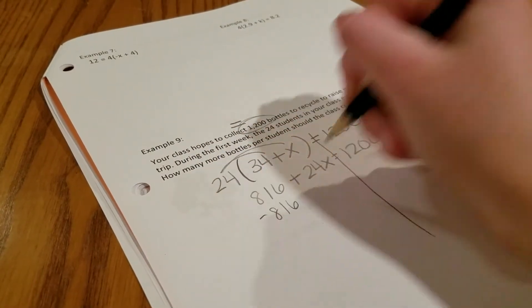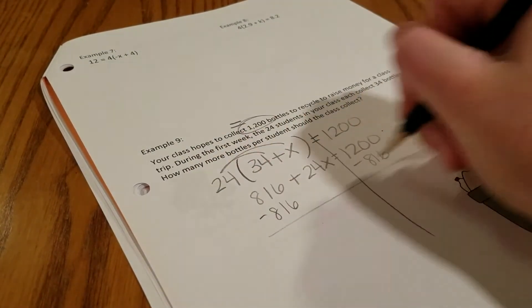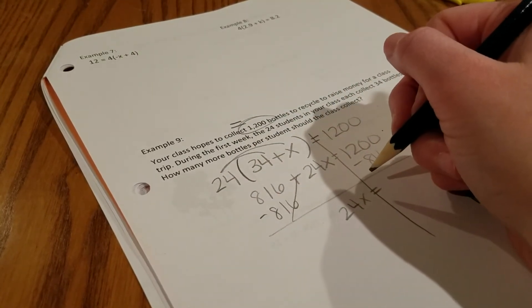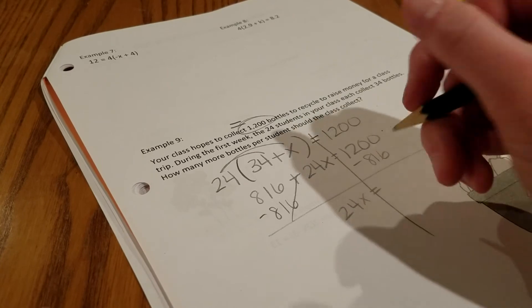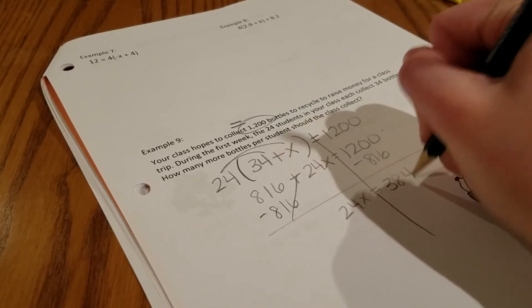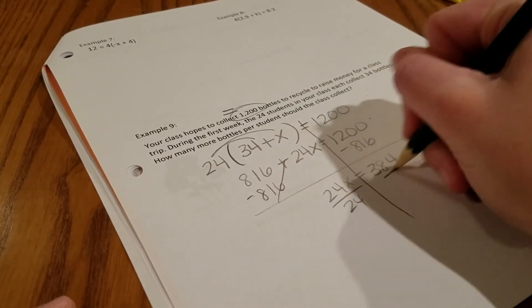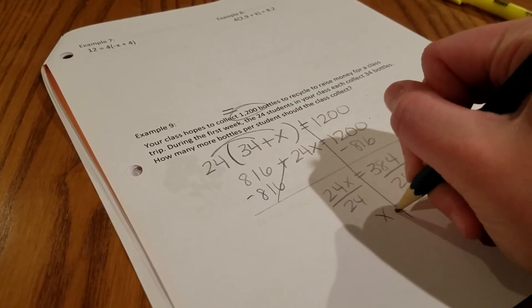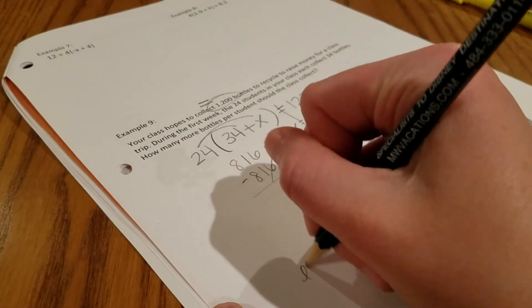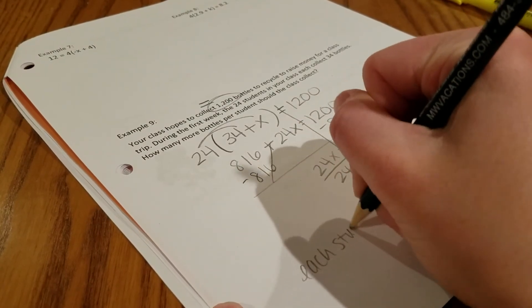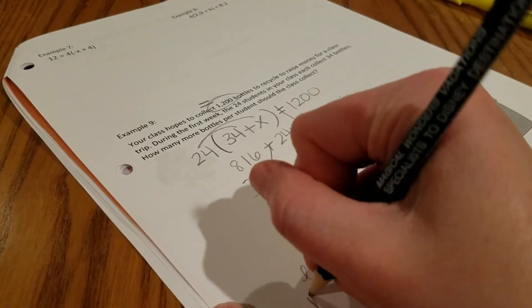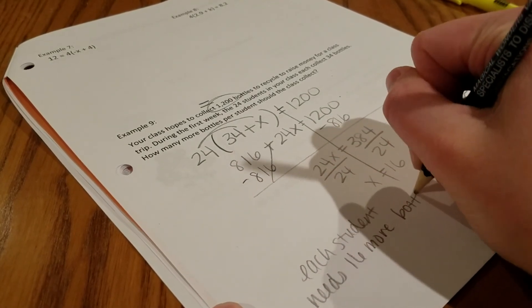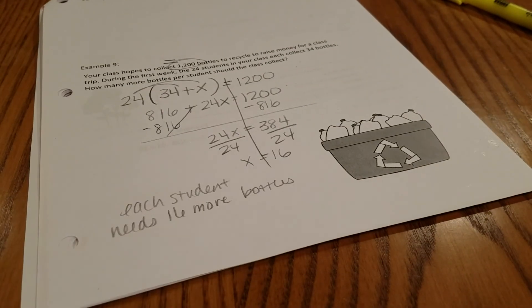We subtract the 816, so we get 24x equals 384. We divide by 24, and we get x equals 16. So each student needs 16 more bottles, and then we'll be done.